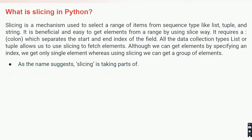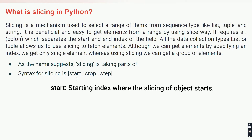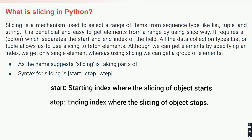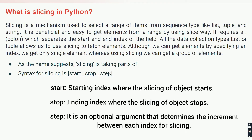The syntax of slicing uses square brackets with three parameters: start position, then colon, then stop position, then colon, then step. Start is the index from which elements will be fetched. Stop is the index position until elements are fetched — if you provide stop as 5, elements until index 4 will be printed (stop minus 1). Step is used to jump a particular sequence; if you provide 2, it will skip elements and print every other one.